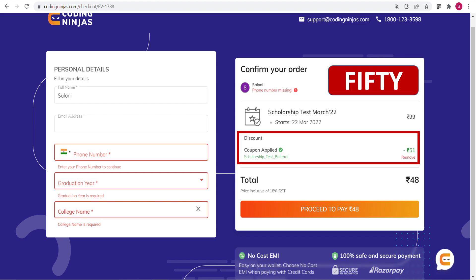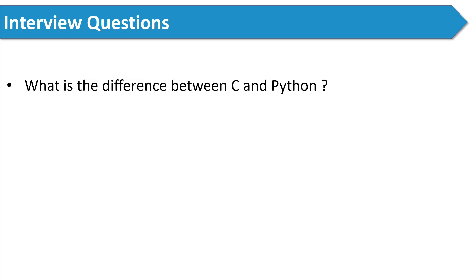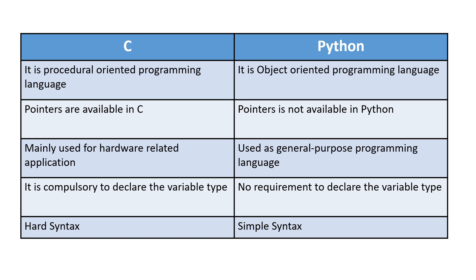The next question is: what is the difference between C and Python? You can mention 2 or 3 differences. For example, you can say C is a procedure-oriented programming language while Python is an object-oriented programming language. In this way you can mention the differences.